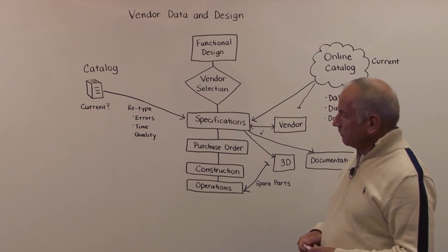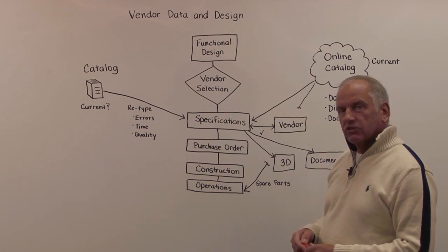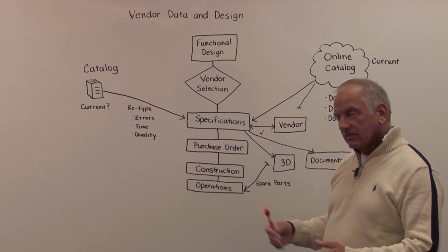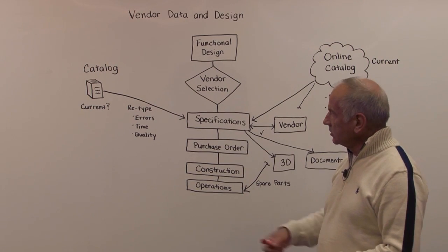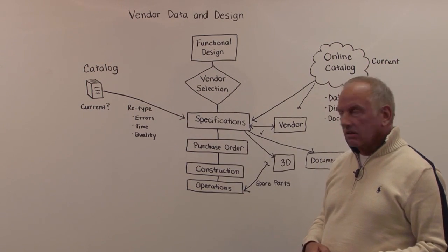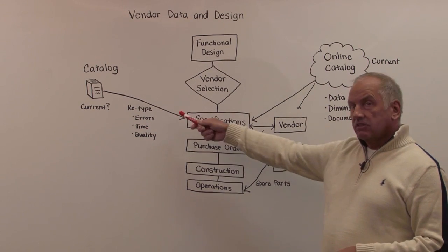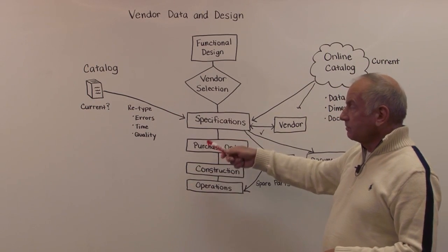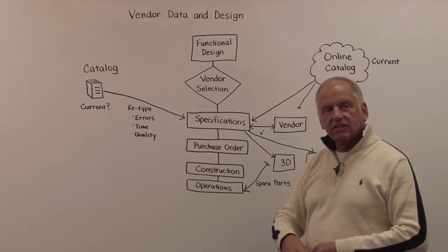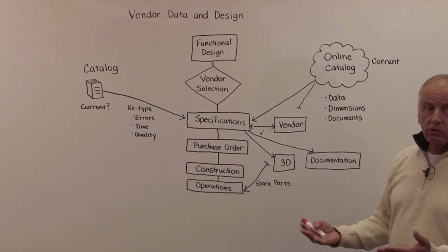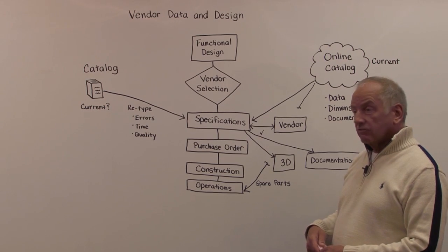Looking at this workflow — which is of course very simplistic — we start with your functional design, and then at one point in time the vendor has been selected. Then the pain starts: we have to find the catalog, make sure we have the current one and not an old one, and then we start to retype the data from the catalog into the specifications. With fat fingers you get errors, it costs a lot of time, and the quality is not as great as it should be.